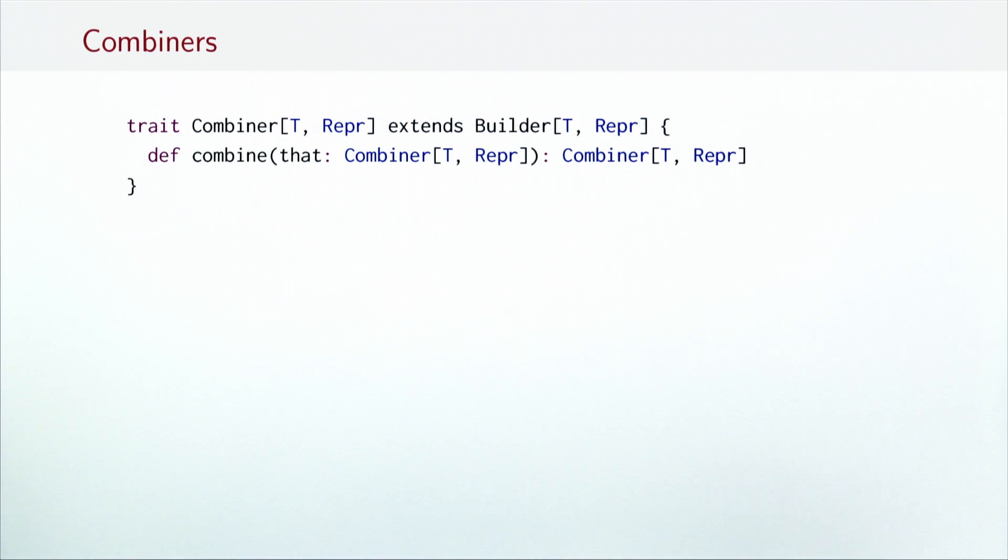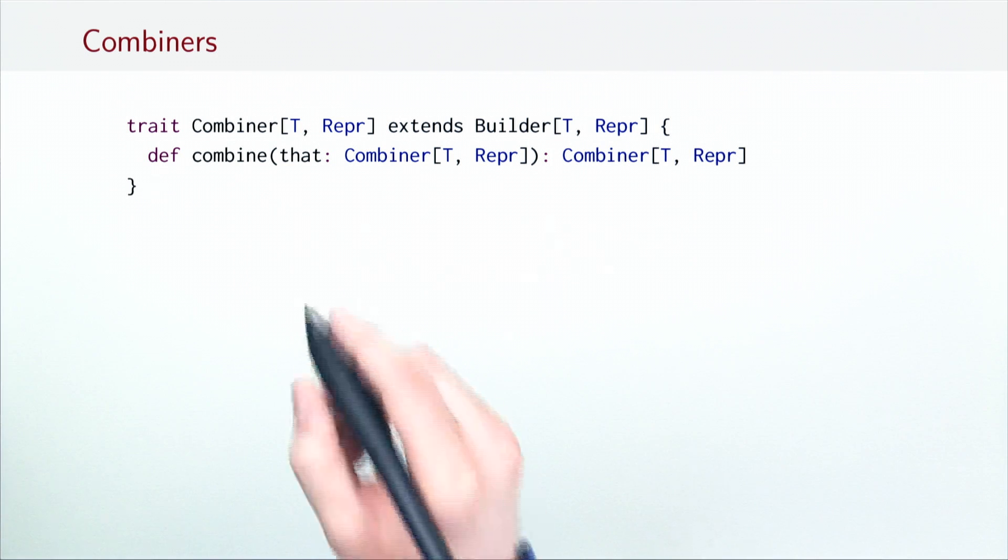Builders can only be used to implement sequential transformer operations. To implement parallel transformer operations, we need an abstraction called a combiner. A combiner is a builder with an additional method called combine, which takes the elements from two input combiners and produces a third new combiner.